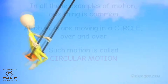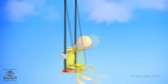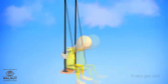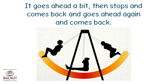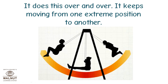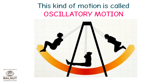How is the swing moving? It's moving back and forth. It goes ahead a bit, then stops and comes back, and goes ahead again and comes back. It does this over and over, keeping moving from one extreme position to another. This kind of motion is called oscillatory motion.